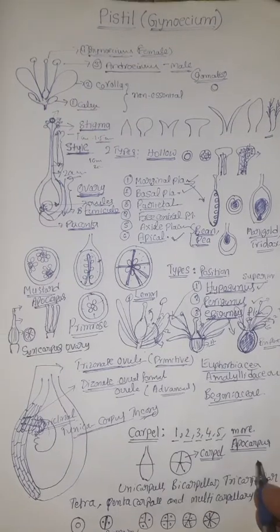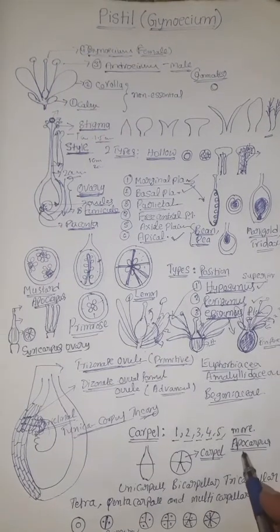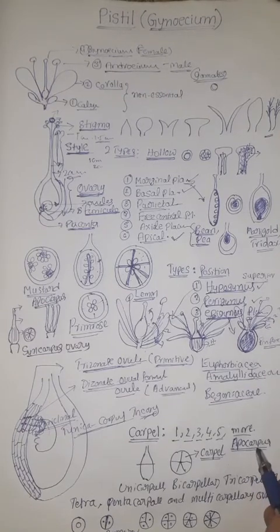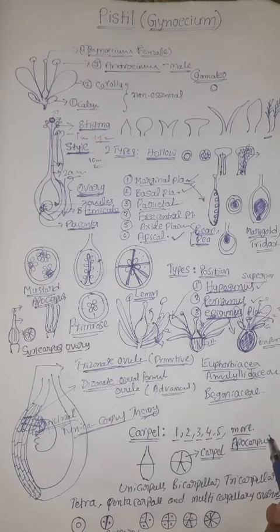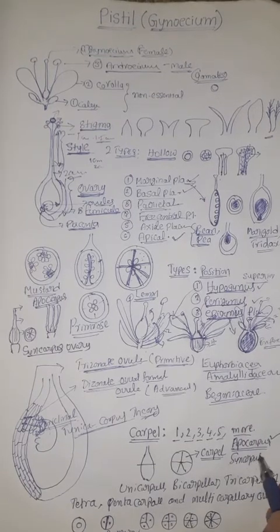Based on whether the carpels are fused or not, we have two more types of ovaries: apocarpous and syncarpous. In apocarpous ovaries, all carpels are placed distantly on the thalamus, not fused to each other.